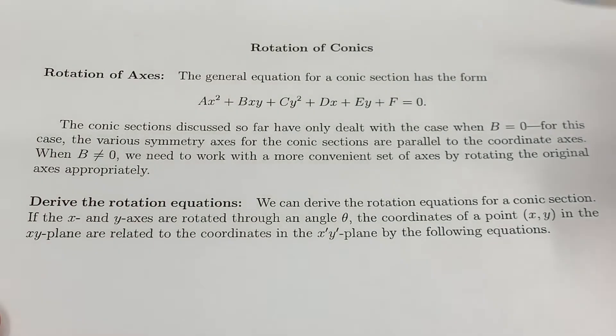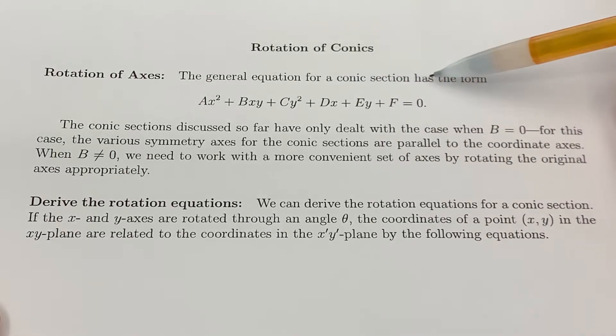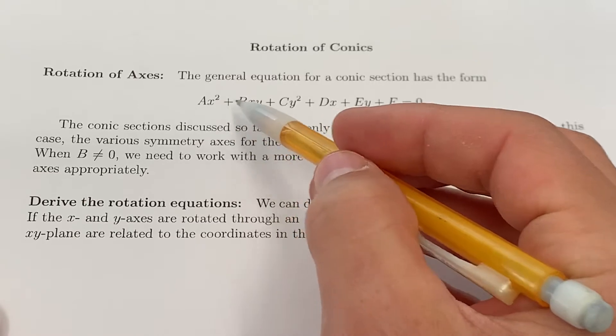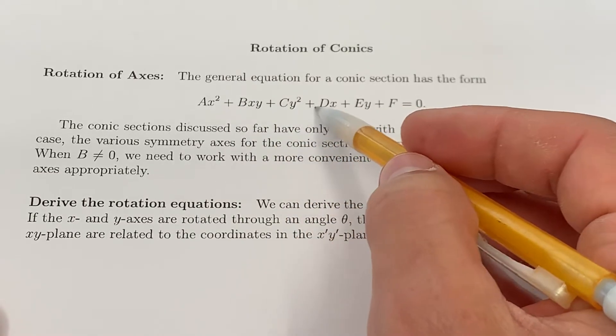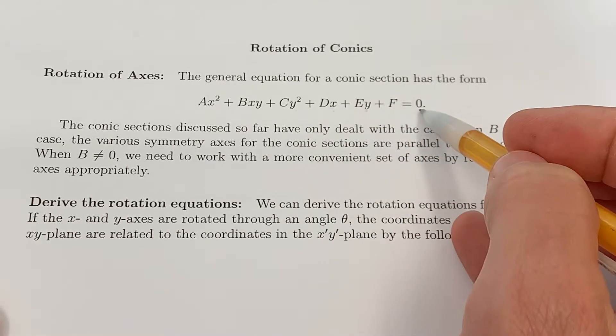It's time to talk about rotating conic sections. The general equation for a conic section has the form ax² + bxy + cy² + dx + ey + f = 0.